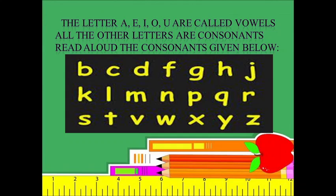The letters a, e, i, o, u are called vowels — this we have learned in the last lecture. All the other letters are consonants.